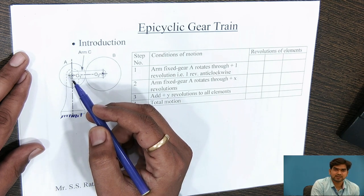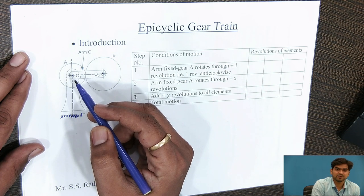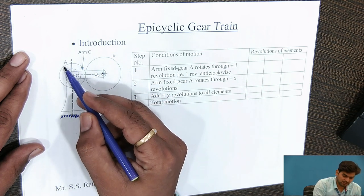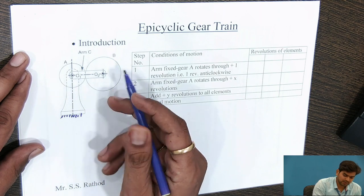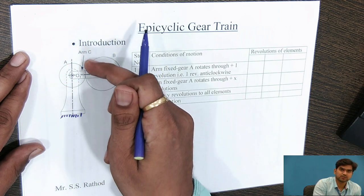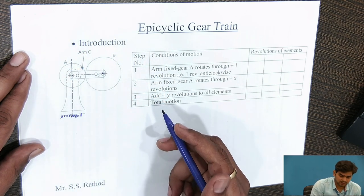Epi and cyclic means: cyclic means around and epi means upon. So, upon and around the gear A, gear B will get rotated, so it is called as an epicyclic gear train.